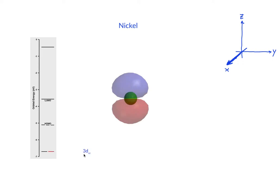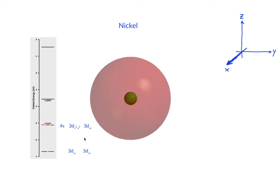This is the d-x-z orbital. This is the d-x-z orbital. The d-y-z orbital. The d-x-z orbital. And then the next orbital in energy is the 4s orbital.